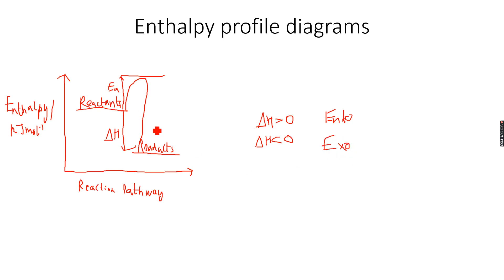Energy is released in an exothermic reaction, and in endothermic reactions energy is taken in. This is how we draw enthalpy profile diagrams. Now, how do we calculate enthalpy changes experimentally? You must be thinking: we know what enthalpy changes are, but how do we get these values on the graph?